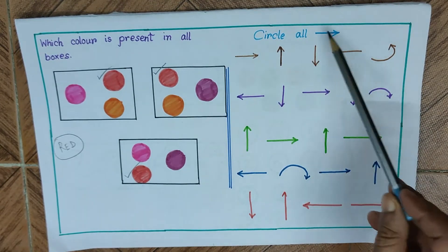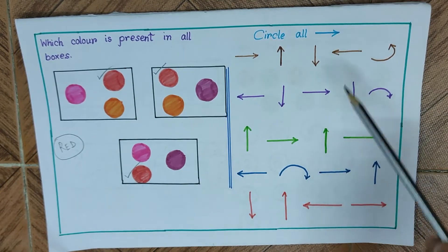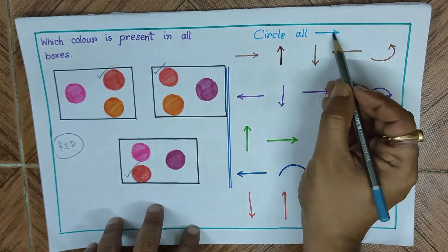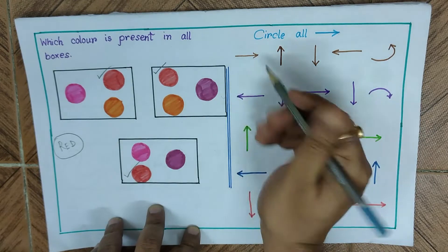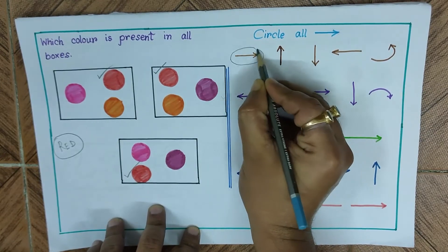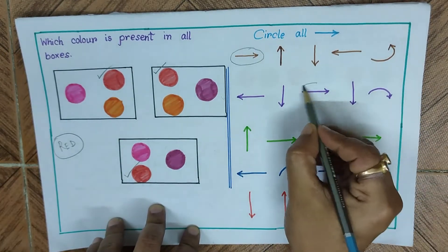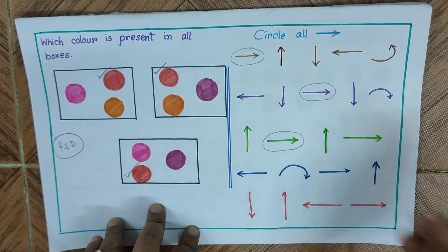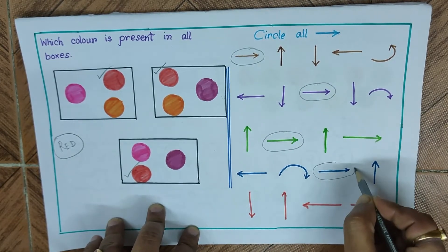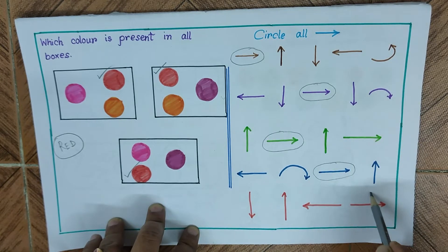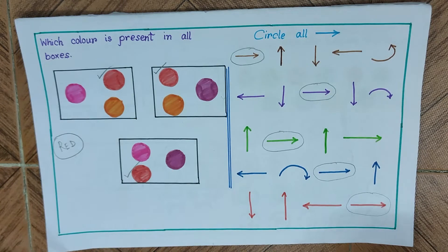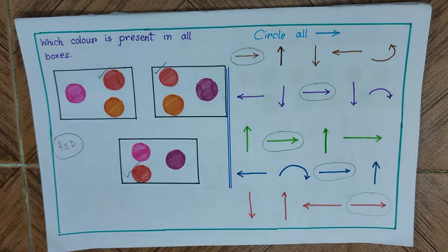The next question says: circle all right-pointing arrows. So whichever arrow is pointing to the right, you have to circle it. This one is right-pointing, this one is right-pointing, this one is right-pointing, this one is right-pointing, and finally in the last row this one is right-pointing. With that, we complete the first page.